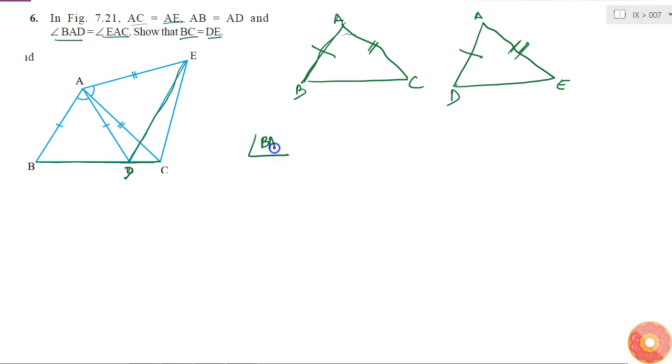Angle BAC is equal to angle BAD plus DAC. And I am given that angle BAD is equal to angle EAC. If I substitute that, then I will get this is equal to angle EAC plus DAC.